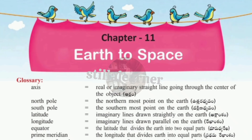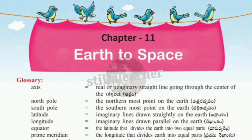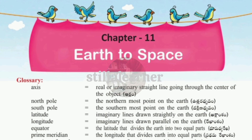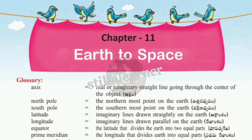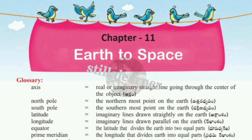Welcome back to the channel. In this video we are going to discuss Class Environmental Science Chapter 11. The name of the topic is 'Earth to Space.' First, we have a glossary, which is nothing but synonyms or meanings from this chapter.